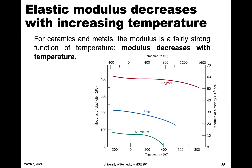Another factor influencing elastic modulus is temperature. Bonding weakens as temperature increases, so the modulus decreases with increasing temperature as atoms move further apart. For example, tungsten tested at very low temperatures is above 400 GPa, but drops to about 350 GPa at 800°C. Aluminum shows the same trend. So if materials are used at very low or very high temperatures, there can be significant differences in stiffness or compliance.